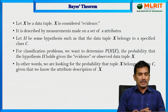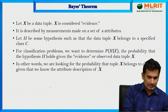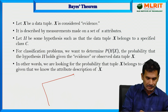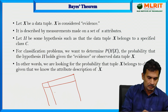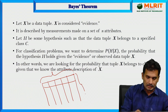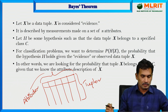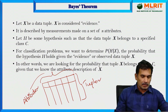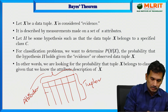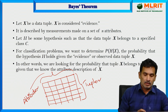Let X be a data tuple, considered as evidence in Bayes' theorem. As we have discussed many times, a dataset has columns which are the attributes, and rows which are the tuples. So X is a tuple — every row is a tuple — and that tuple is considered as the evidence.